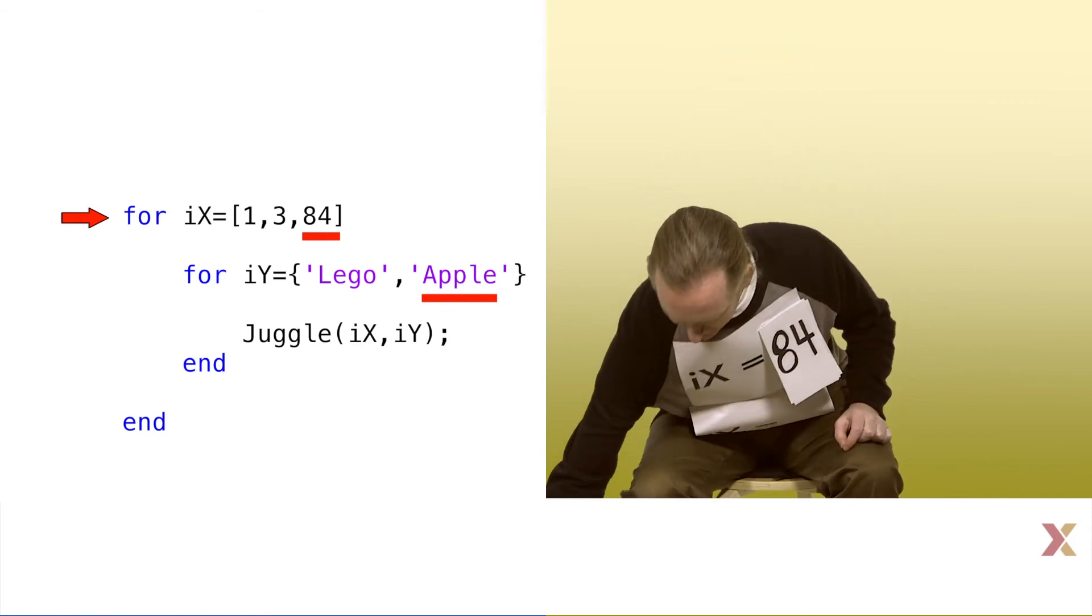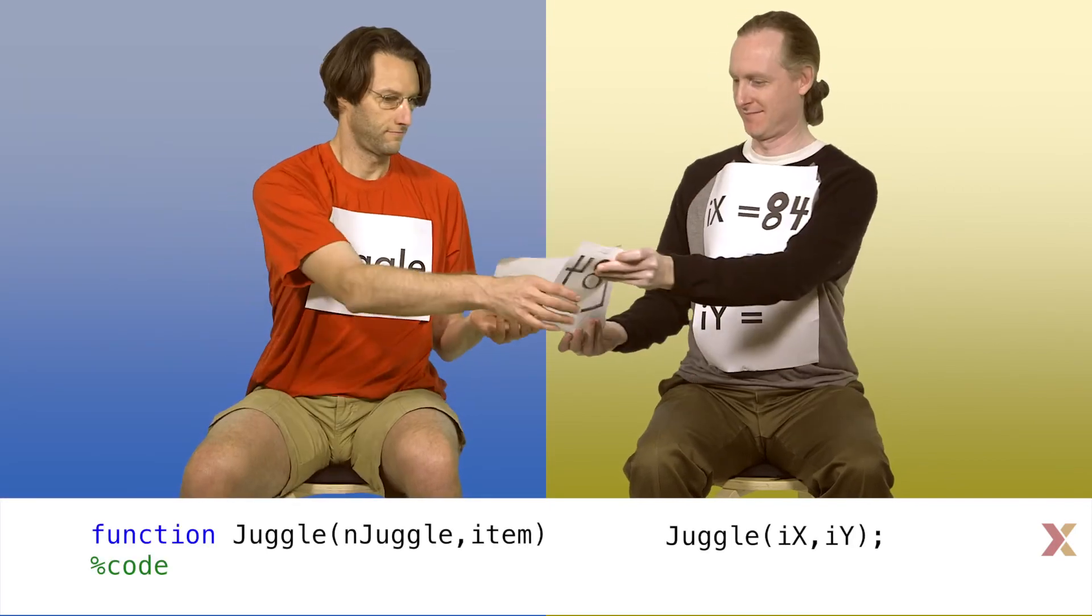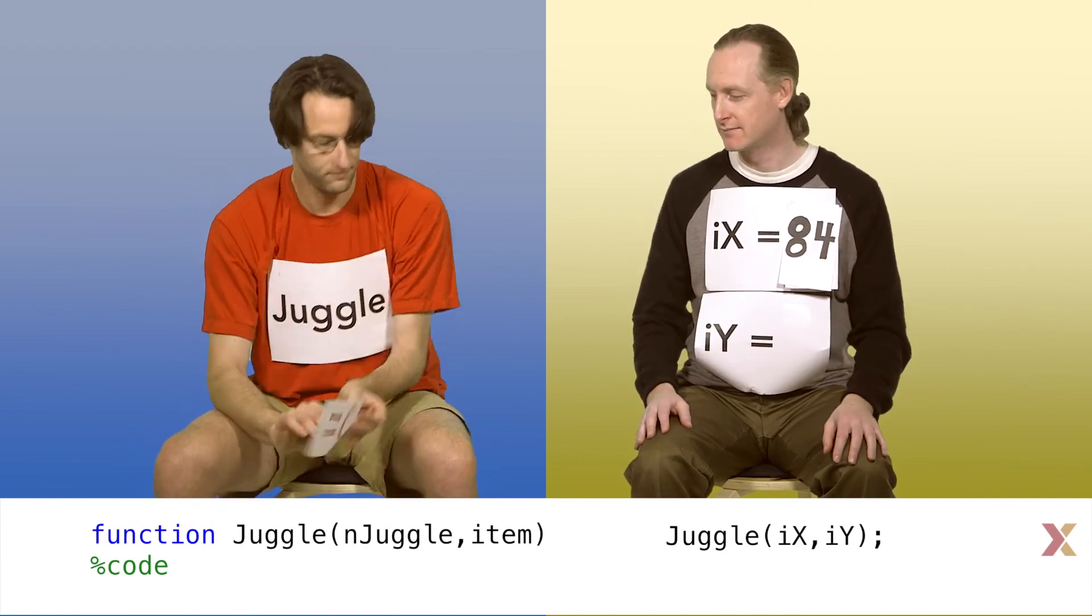ix will have a value of 84 and iy will have the value lego. As always, it's not a bad idea to have your function checked to make sure that the values are reasonable.